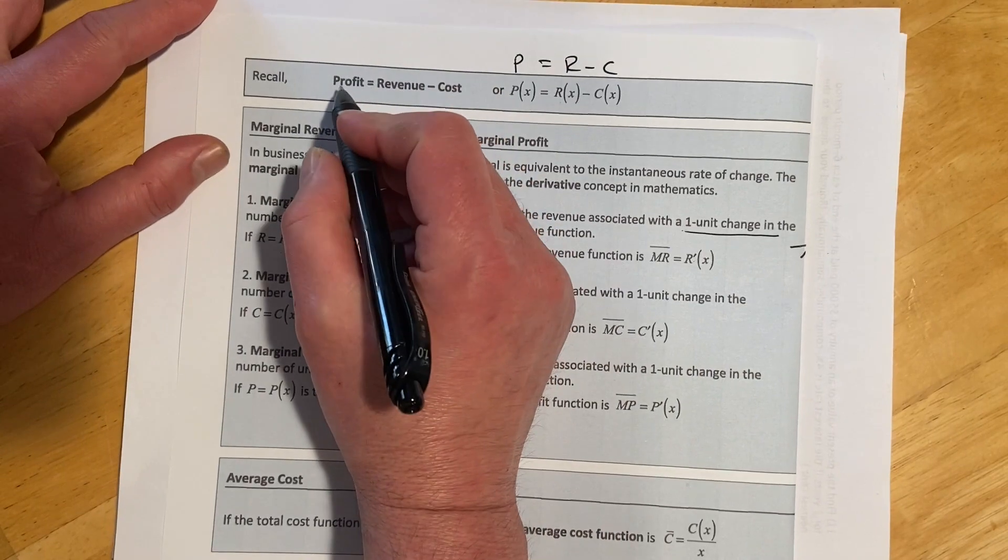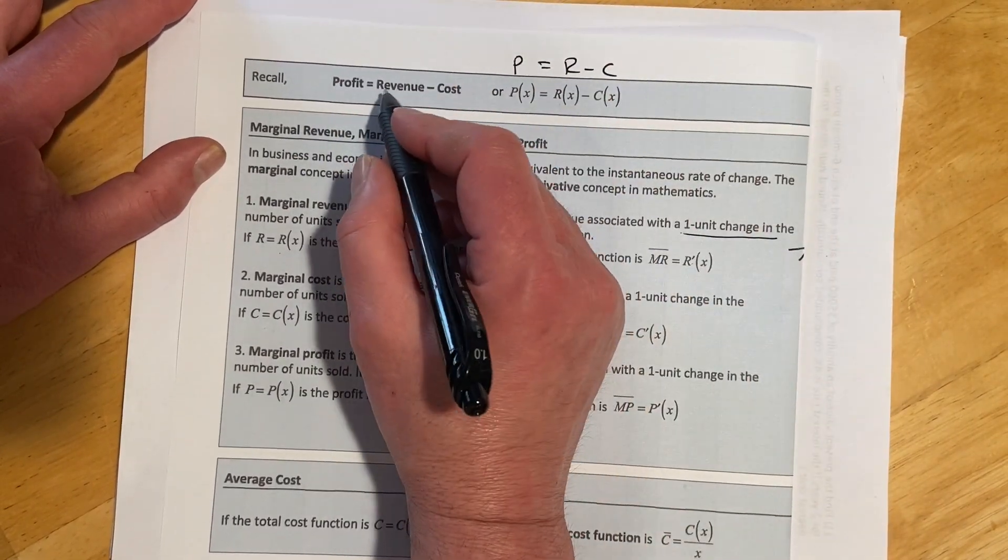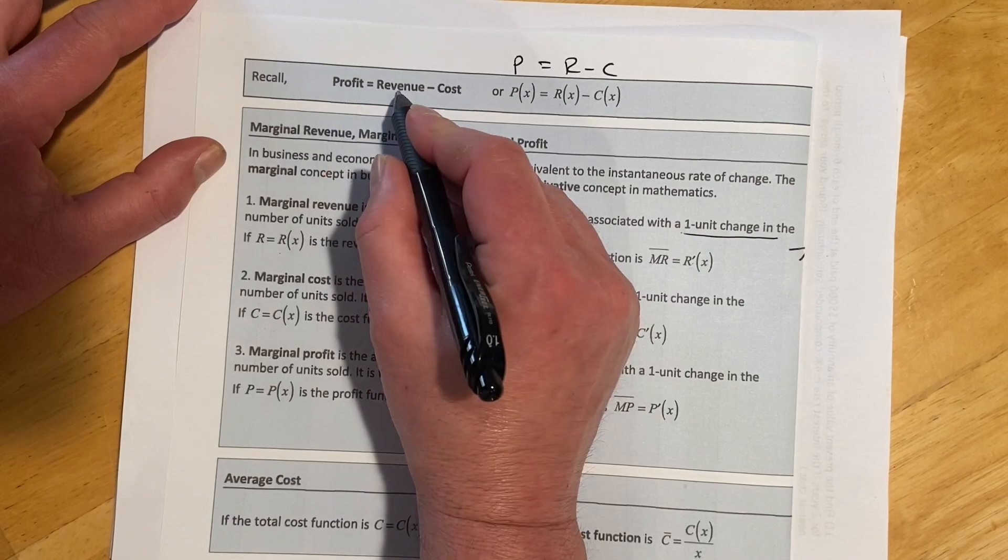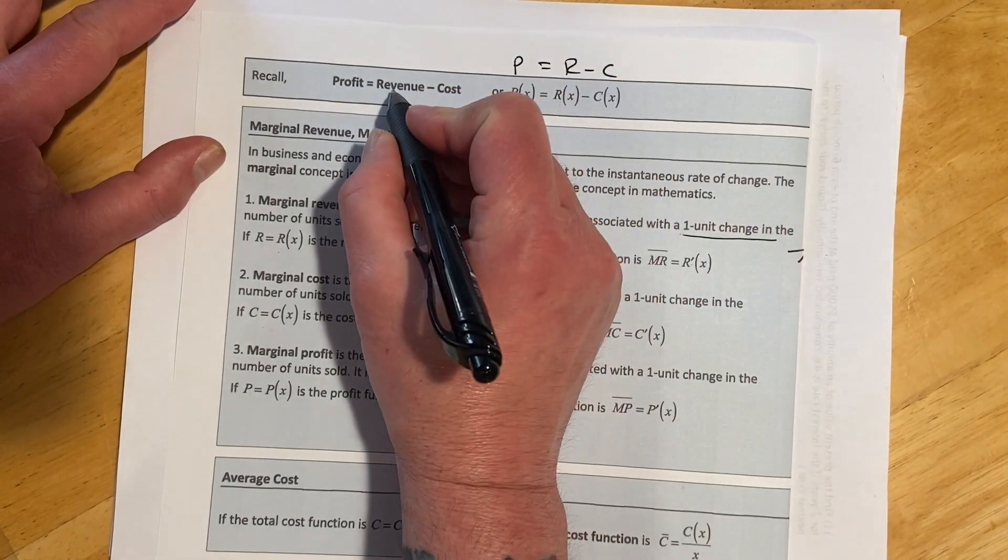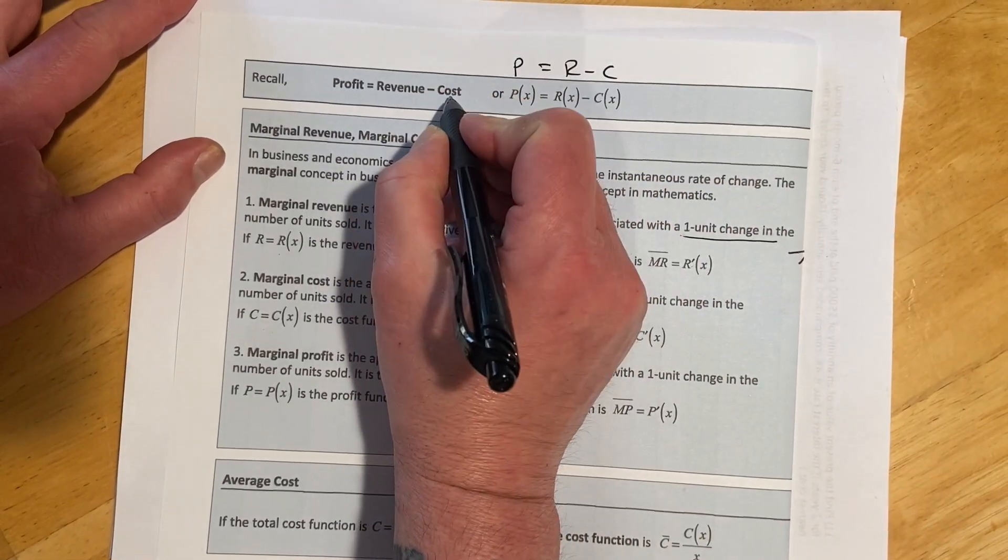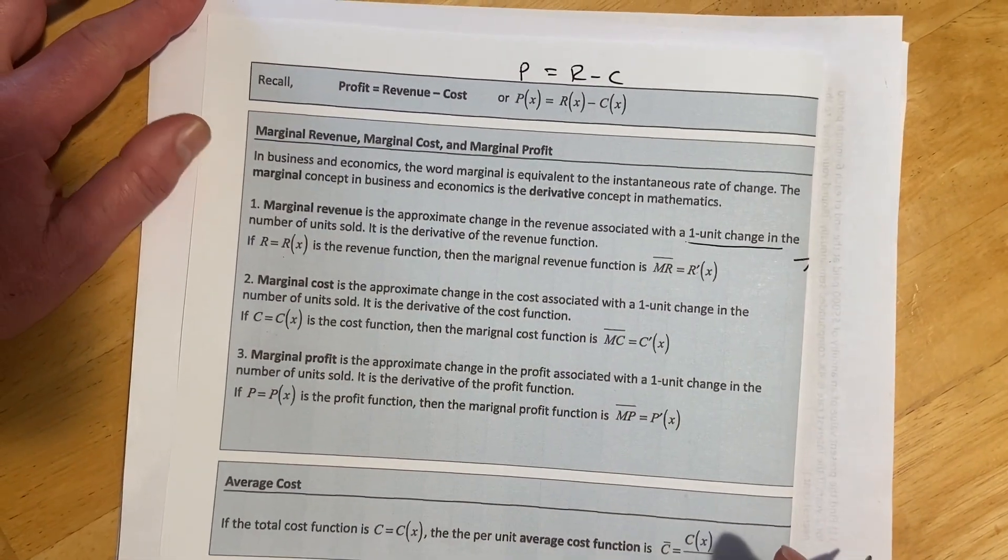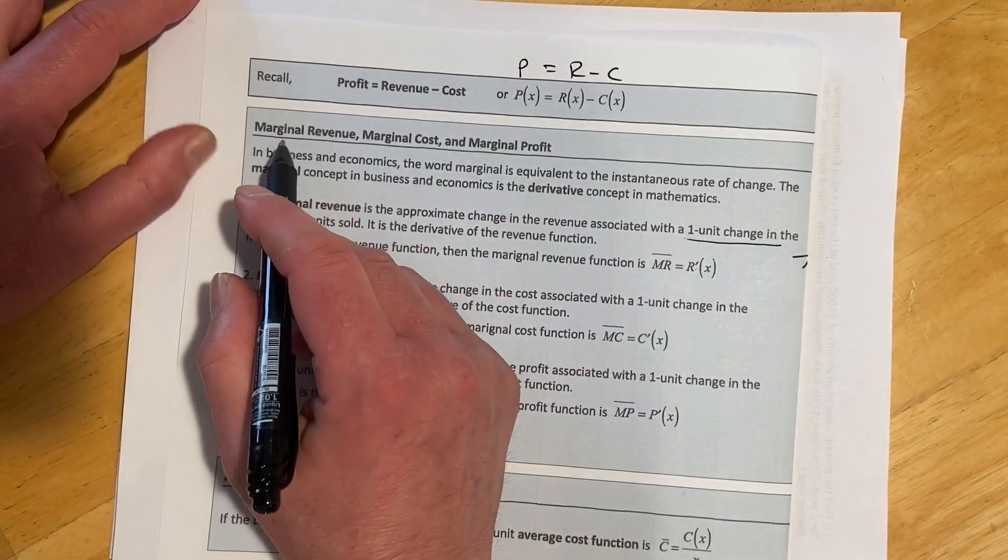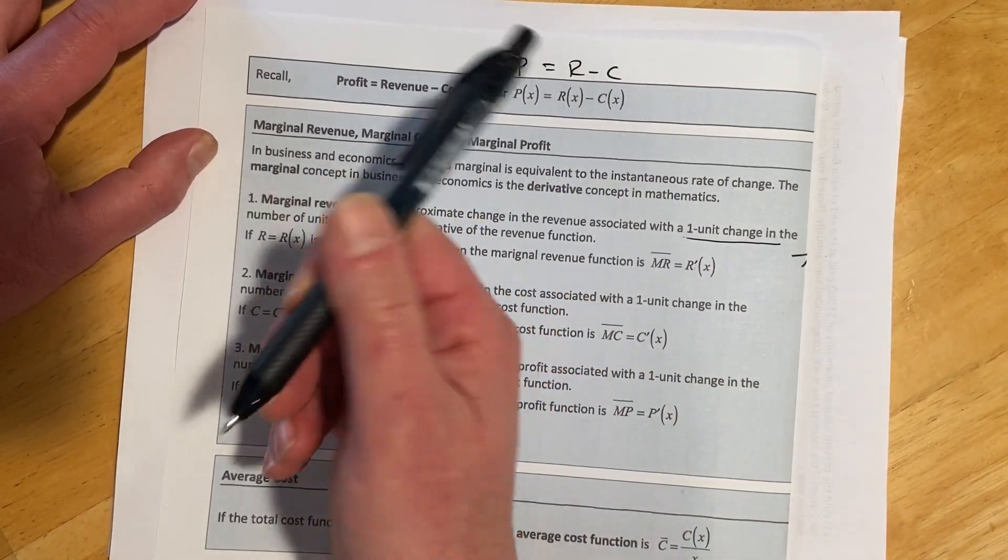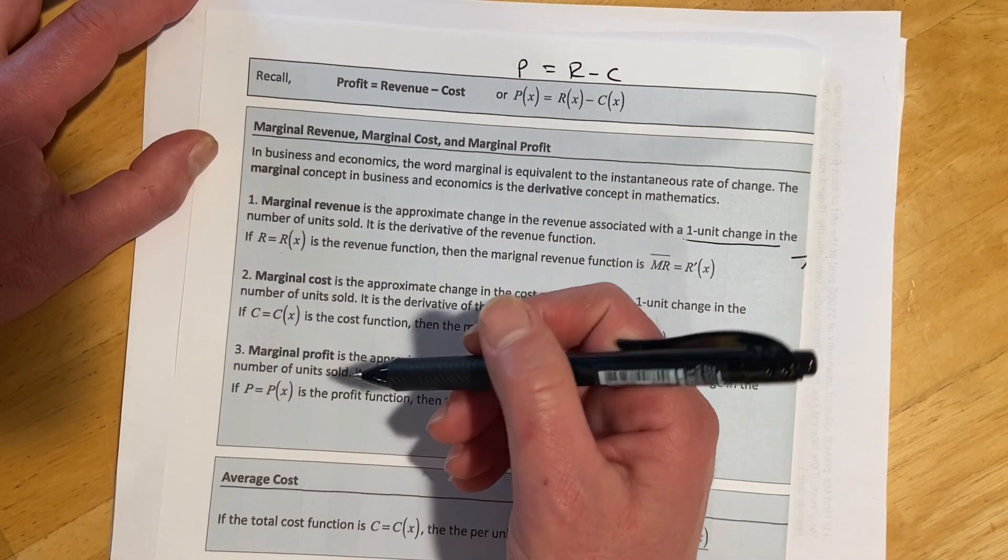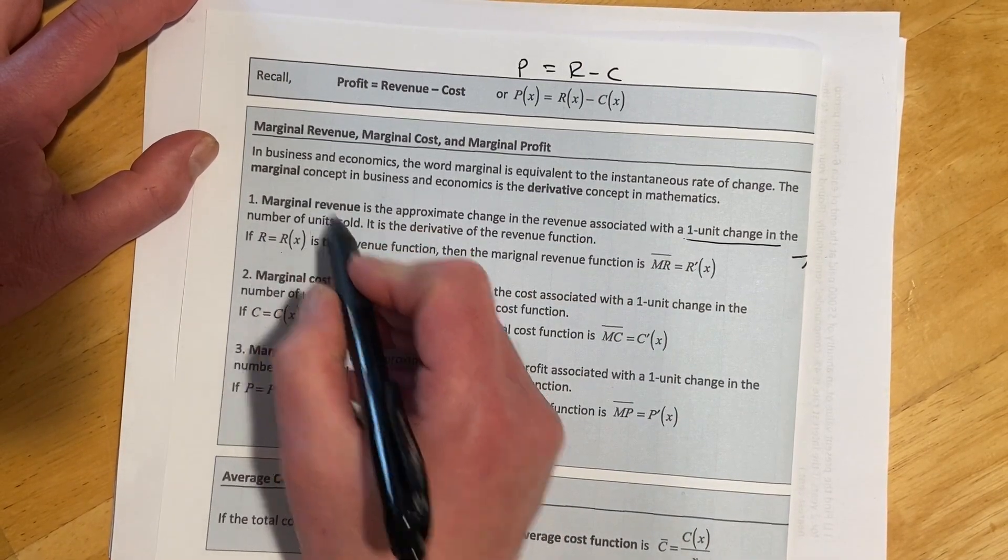So first off, let's recall from probably 116, profit, revenue, and cost. So profit is how much money you make. Revenue is how much money you take in. Cost is how much money you spent to make the thing. So you do how much money you took in minus how much money you spent. And then that's going to be your profit. Remember, profit can be positive or negative.